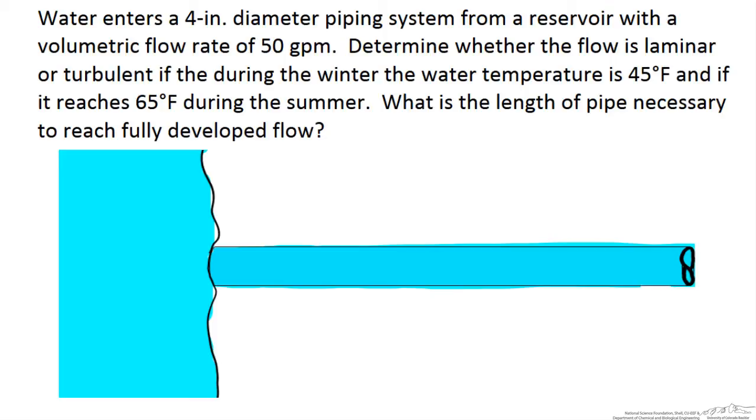We want to determine whether the flow is laminar or turbulent if during the winter the water temperature is 45°F and if it reaches 65°F during the summer. What is the length of pipe necessary to reach fully developed flow?